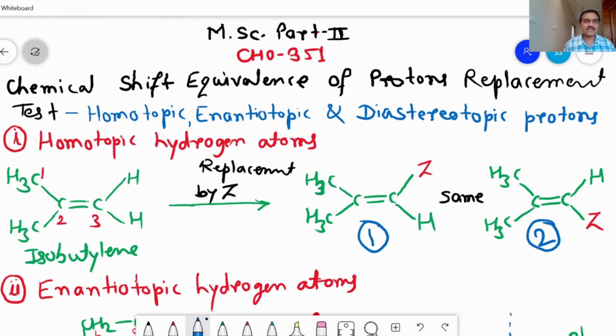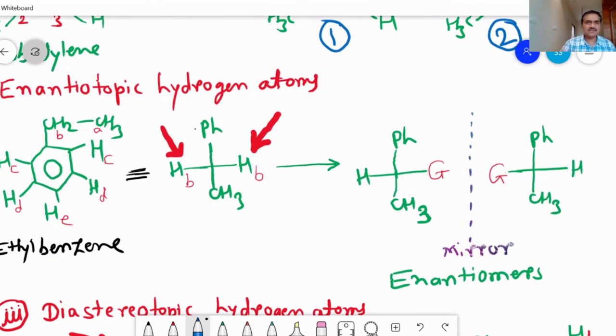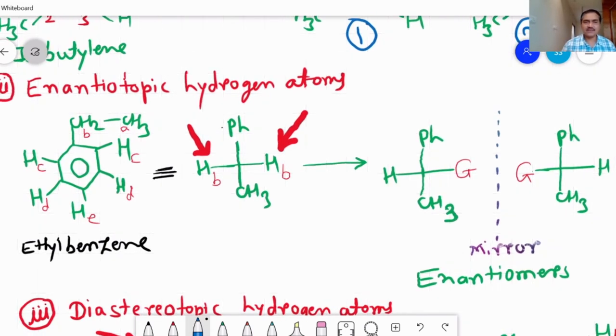Then second one is enantiotopic hydrogen atoms. We consider the example ethylbenzene, where there are five different protons present here. And we consider the enantiotopic hydrogen atoms HB, and we replace the HB and HB by the Z group.